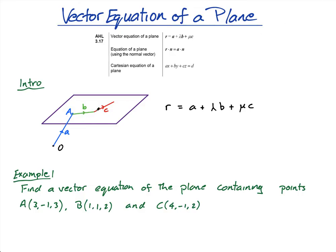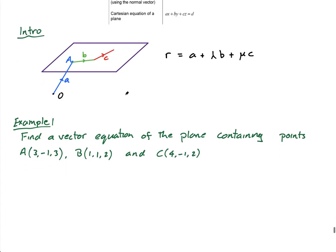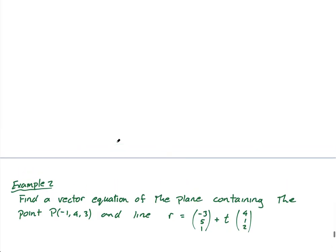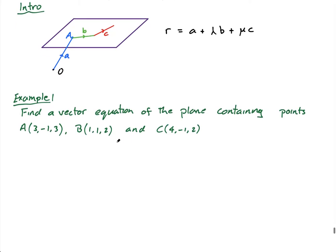You'd have one vector parallel to the plane and another also parallel to the plane but not parallel to each other. Once you have two such vectors you can get to any point on the plane. For example, to reach a particular point you go along B however much you need and then along C however much you need.